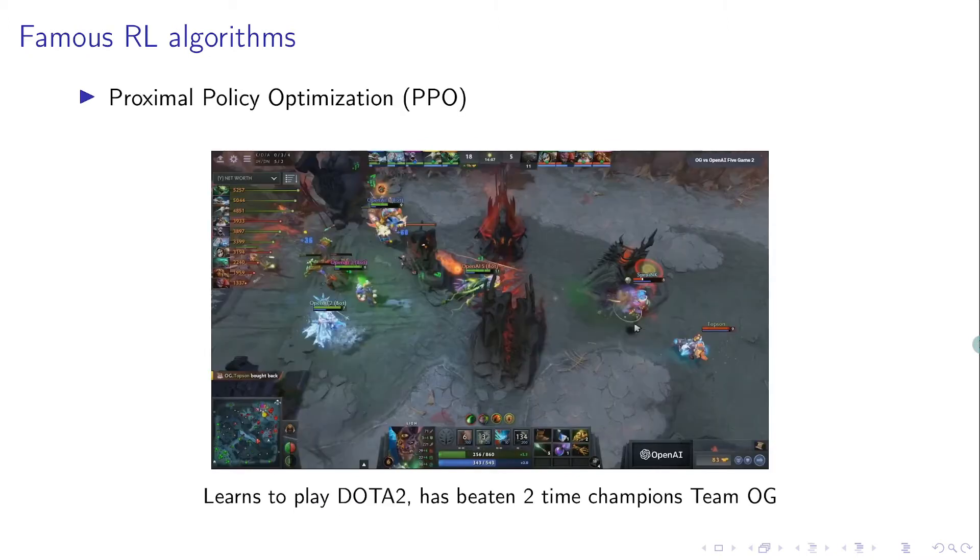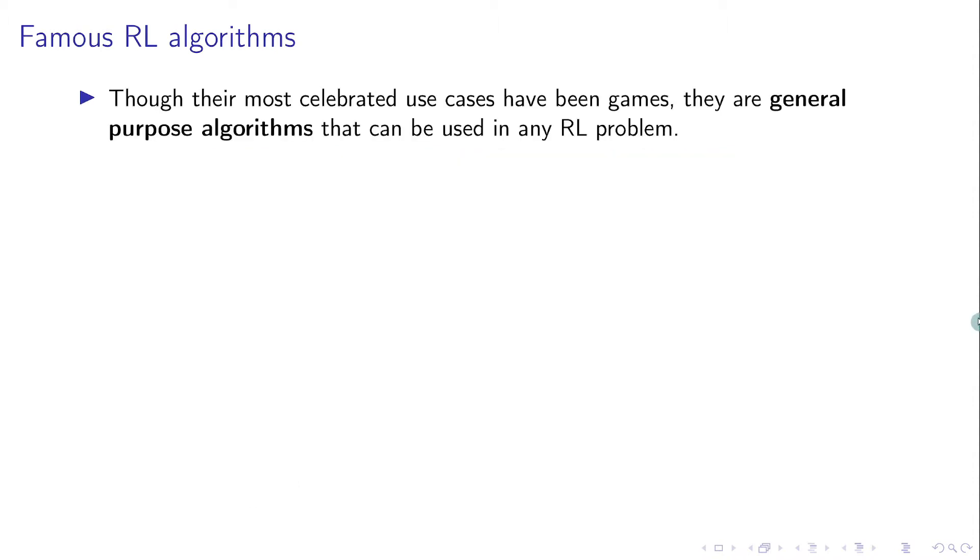Yet another famous one is Proximal Policy Optimization, which was used to beat esports champions in the game of Dota 2. Now, even though these algorithms became popular because of their application in games, they are actually general purpose algorithms that can be used to solve any reinforcement learning problem. And at the high level, all these algorithms work in the same way. So let's explore how they work.